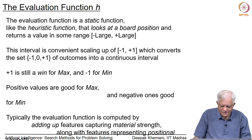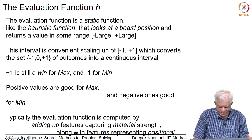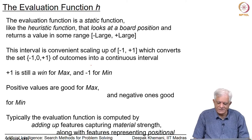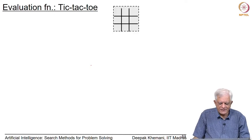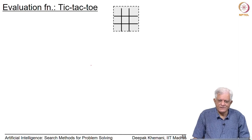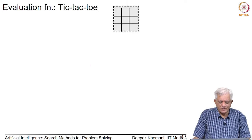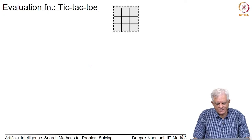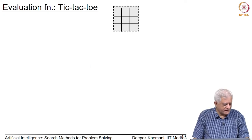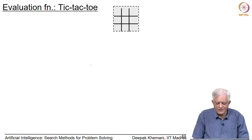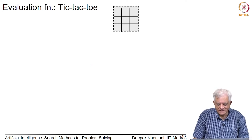Typically the evaluation function is computed by adding features capturing material strength along with features representing positional strength. Let us look at some of them. Let us consider the simple game of tic-tac-toe, also known as cross and knots, where alternately you put a cross or a zero on one of the 9 squares. This is a starting position in which max has to move and must decide where to put a cross.